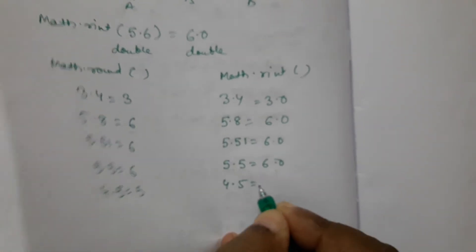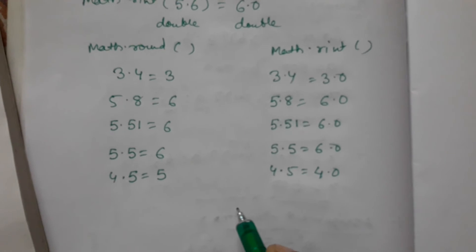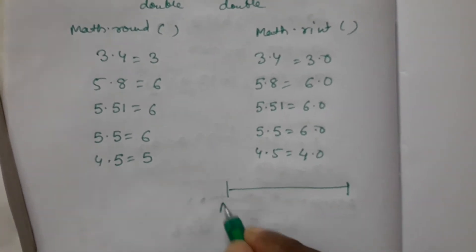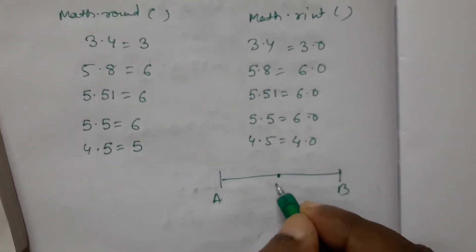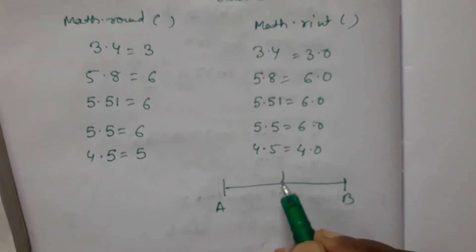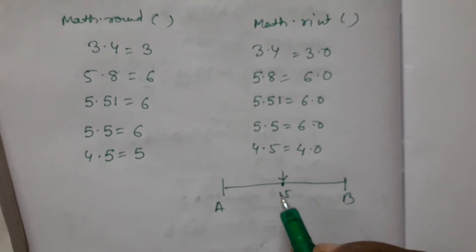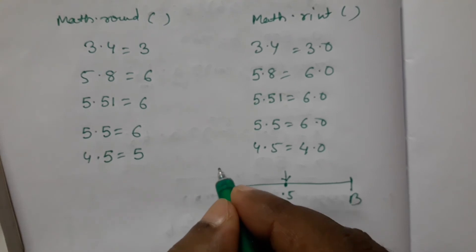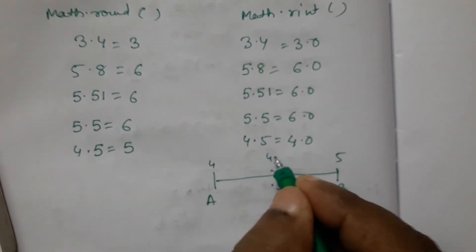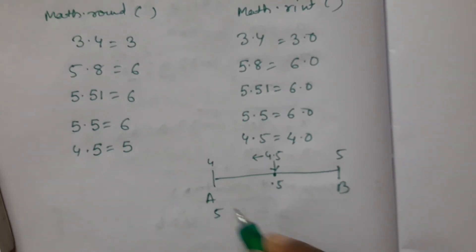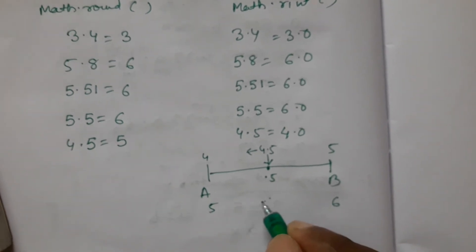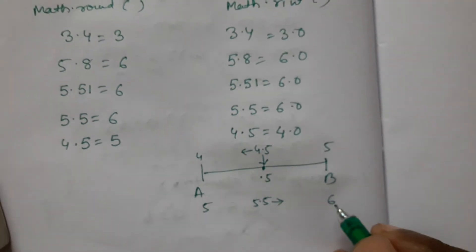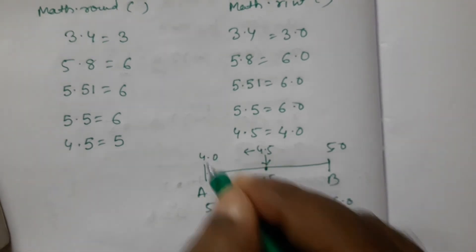But here is the difference: for Math.round, 4.5 gives 5, but for Math.rint, 4.5 gives 4.0. For rint, when a value is exactly at the midpoint (0.5), it goes to the nearest even integer. So between 4 and 5, the nearest even value is 4, so 4.5 → 4.0. But between 5 and 6, the nearest even value is 6, so 5.5 → 6.0.